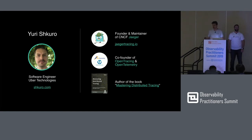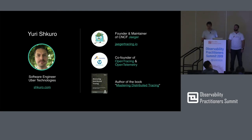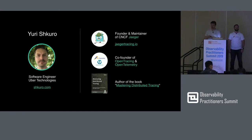By way of introduction, I worked at Uber for about four and a half years, all on the observability team, with a primary focus on distributed tracing. We started the project Jaeger, which is now a CNCF graduated project — we graduated in October. I was also very much involved in OpenTracing and OpenTelemetry, and I wrote a book earlier this year about tracing. You can find it on my website. It talks about tracing, how you deploy it, how you run it in production, and more.